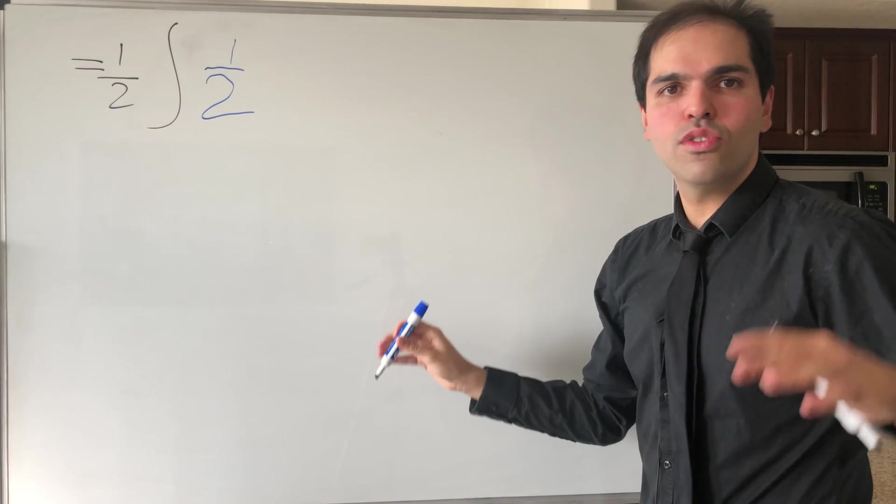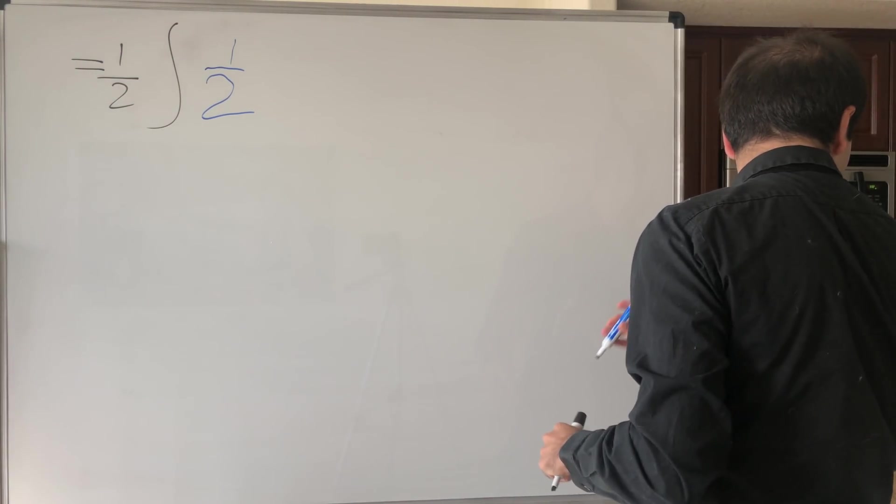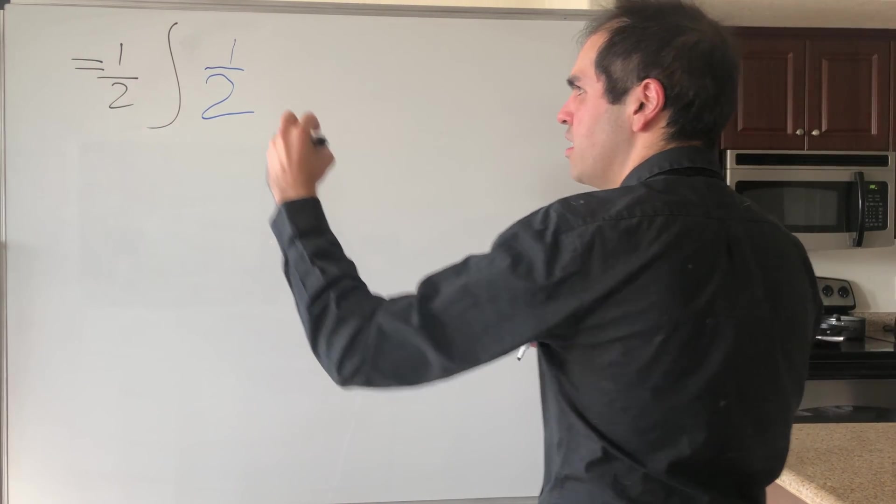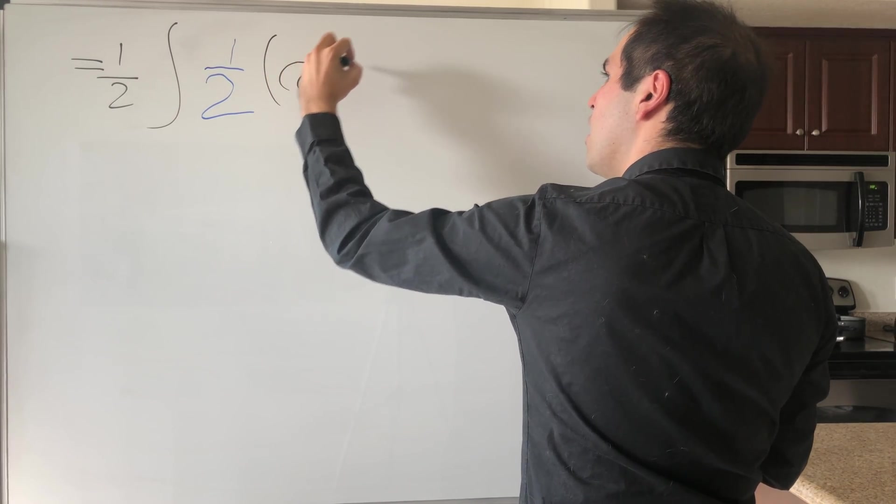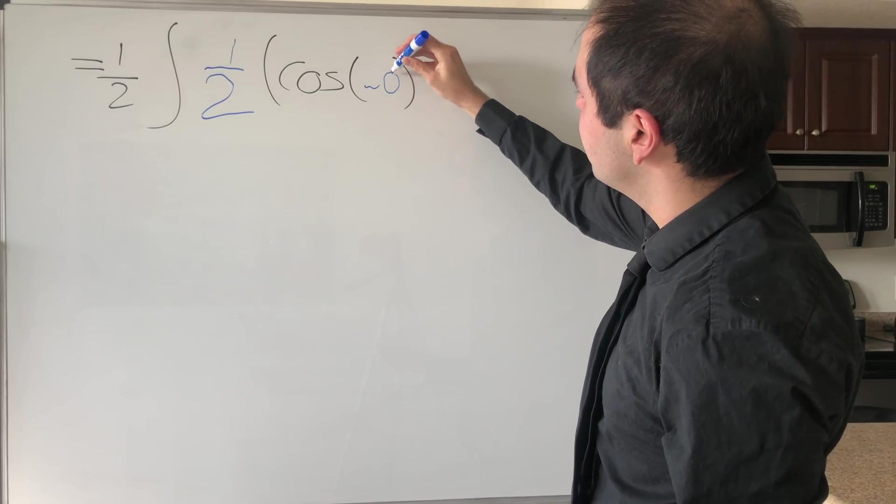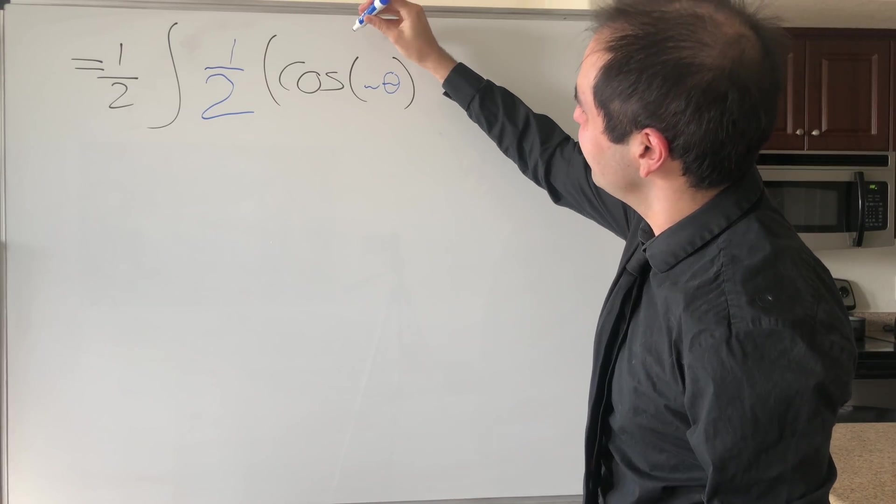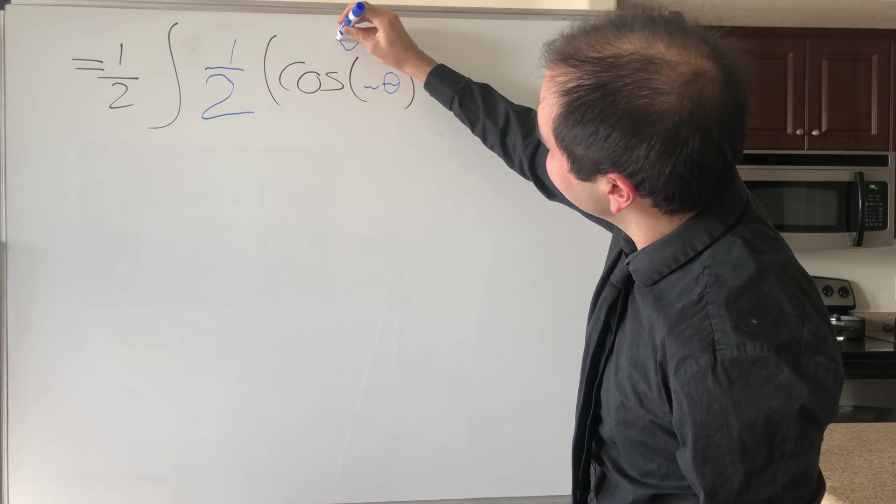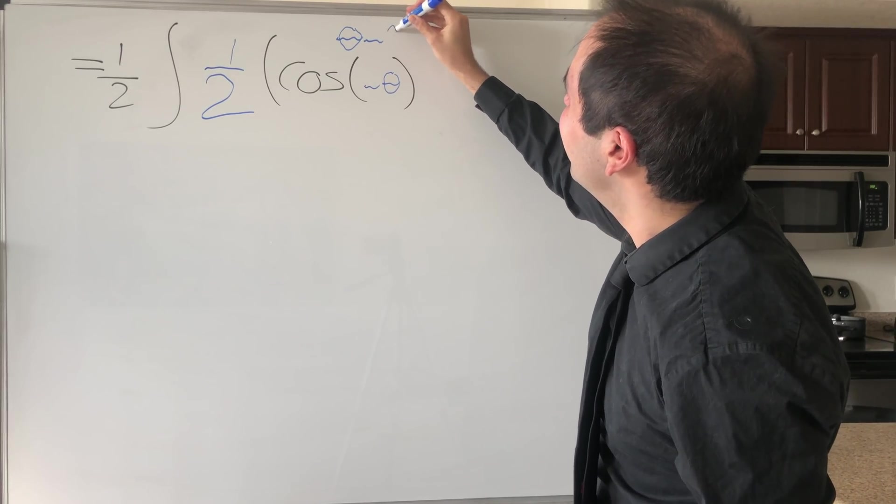One half. So cosine of theta plus two theta. So cosine of, sorry, cosine of theta minus two theta. So cosine of minus theta. And again, to emphasize, just to make this clear that it's theta minus two theta.